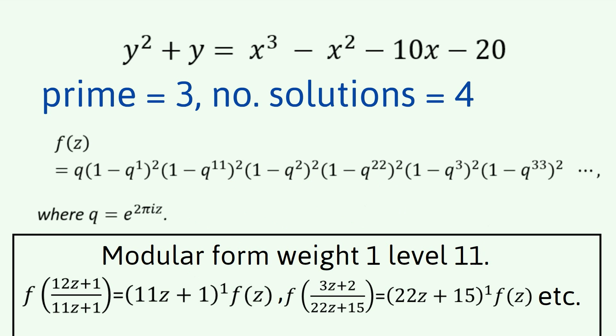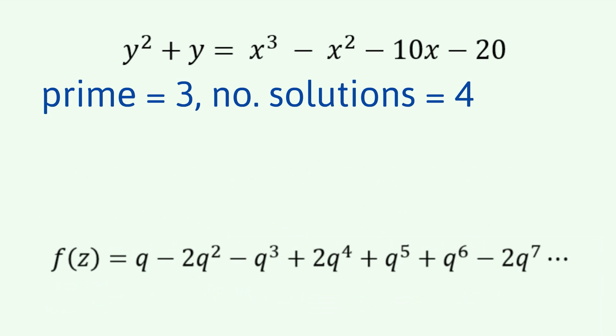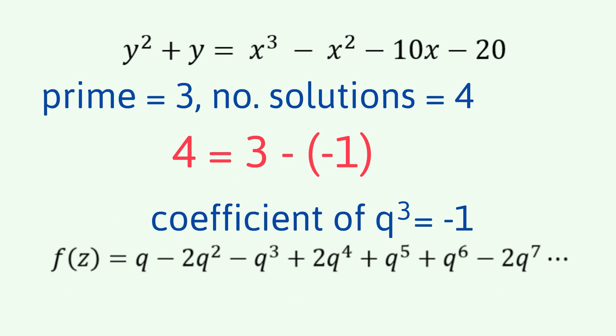Now, when we expand this out, we can collect all the similar terms or similar powers of q. So, we get q minus 2q squared and on it goes. And we can read off the coefficient of q cubed and we're doing that because we're interested in this prime of 3 and we get negative 1. So, it turns out that if we want to know the number of solutions to the elliptic curve modulo 3, then we can take the 3 and we can subtract the coefficient in the modular form. So, what I'm saying is there are 4 solutions and 4 equals 3 minus negative 1.